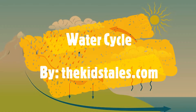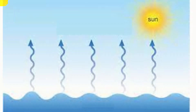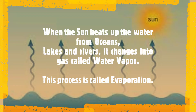Hello kids, welcome to the kidstales.com. Have you ever wondered where the rain comes from? This is a part of the water cycle. Let us understand it better. When the sun heats up the water from oceans, lakes and rivers,